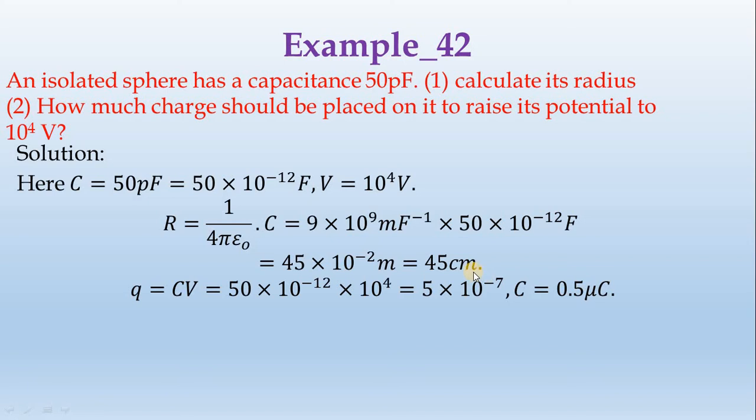Next, we calculate Q. Q equals C times V. C and V are given data. Calculating, Q equals 50 times 10⁻¹² times 10⁴, which equals 5 times 10⁻⁷ coulombs. That is 0.5 microcoulombs.